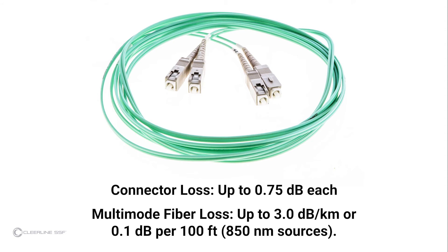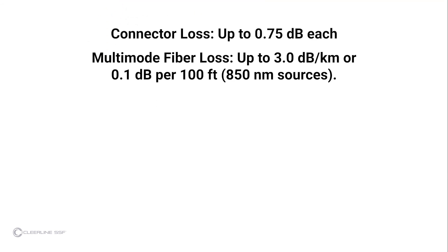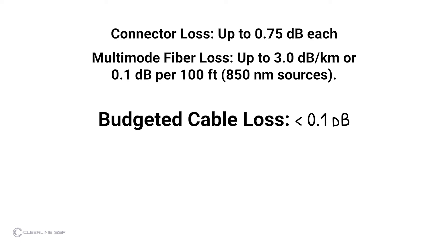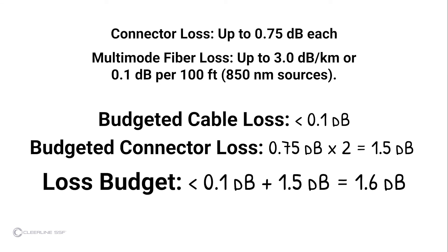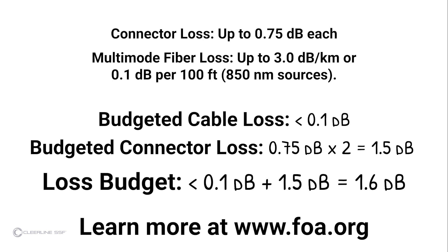For multi-mode fiber, the loss is about 3.0 decibels per kilometer for 850 nanometer sources, or 0.1 decibels per 100 feet. In this video, the cable under test is quite short, so the cable loss calculation is less than 0.1 decibels. The loss calculation for the connectors is 1.5 decibels — 0.75 decibels per connector times 2 connectors. The test result is less than 1.6 decibels, so the cable passes industry standards for link loss. Refer to the included Fiber Optic Association guidelines or visit the FOA on the web for further information on fiber testing or installation.